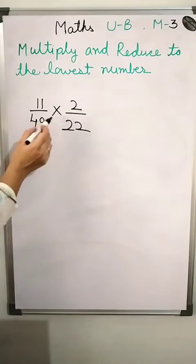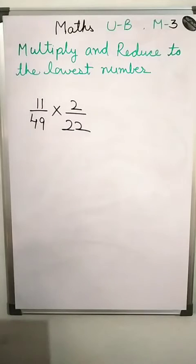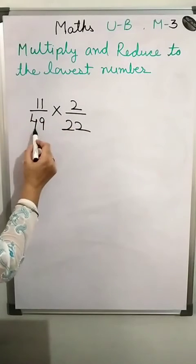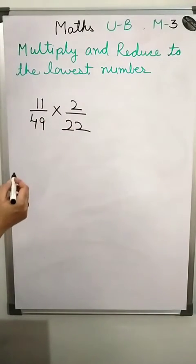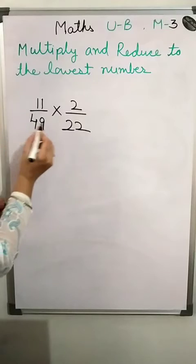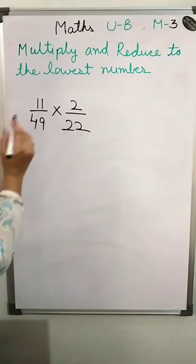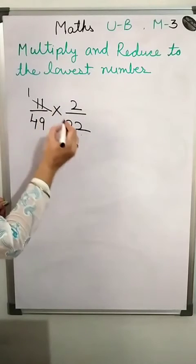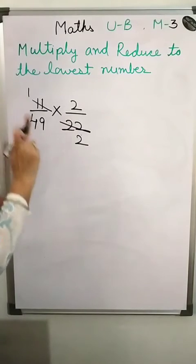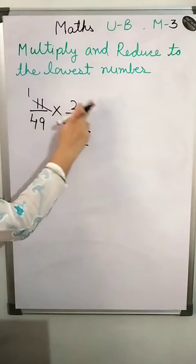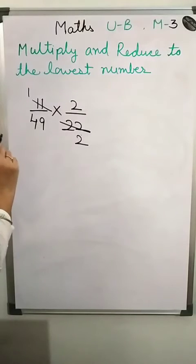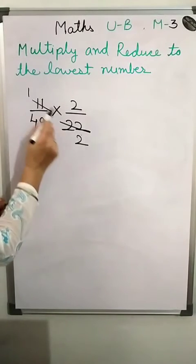Next question: 11/49 multiplied by 2/22. We can go faster. Cut numerator to denominator — look at 22 and 11: 22 is a multiple of 11, so we cut them. Remember: you always reduce numerator to denominator, not numerator to numerator.